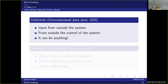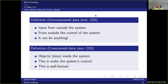The first data type is an unconstrained data item (UDI), which is basically input that comes from outside the system — it can be anything, such as user input in a text field or network data. The second type is constrained data items (CDIs), which are objects or data inside the system under the system's control. CDIs are well-formed, and the naming reflects that the system has ensured the constraints on these data items are valid. UDIs, coming from outside, are totally unconstrained and could be anything.